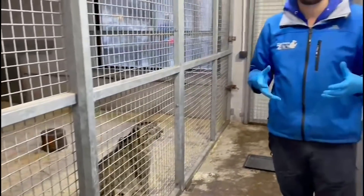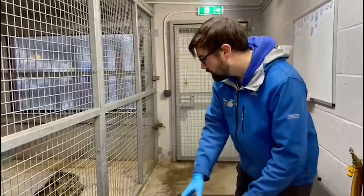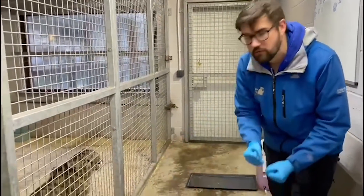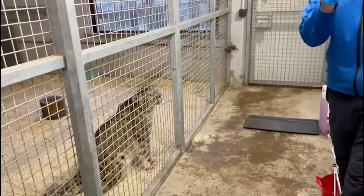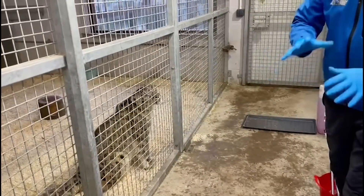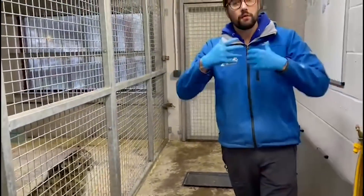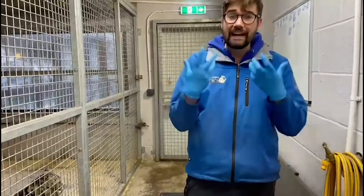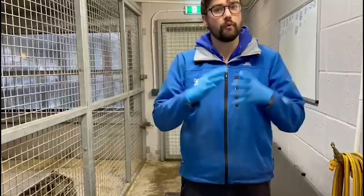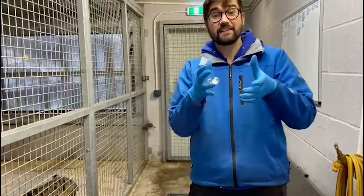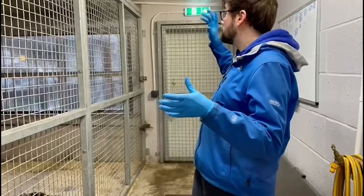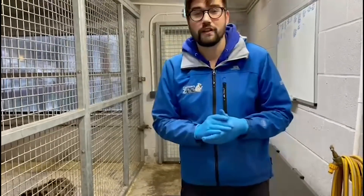Snow leopards will also wrap their tail around themselves a little bit like a scarf for some extra warmth. Their feet are really really furry - the fur on their feet is really thick - and those feet act a little bit like snowshoes when they're moving around in the cold icy snowy conditions up on top of those mountains.